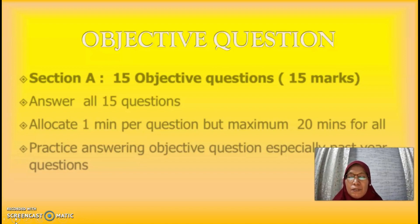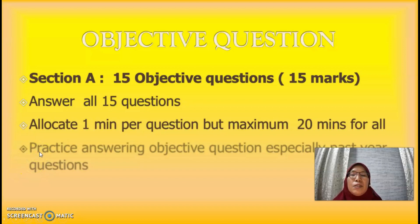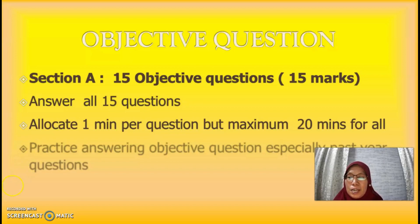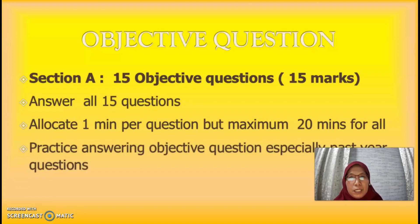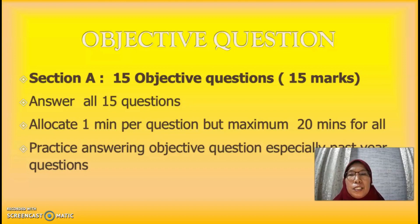For Section A, there are 15 objective questions worth 50 marks and you must answer all 50 questions. For each question you must spend about one minute, with a maximum of 20 minutes total. The biology SPM exam is one hour and 30 minutes only. To get higher marks in the objective section, practice past year questions.